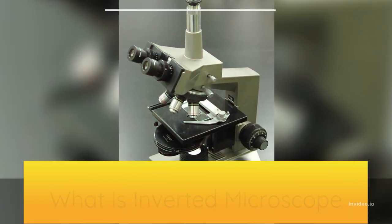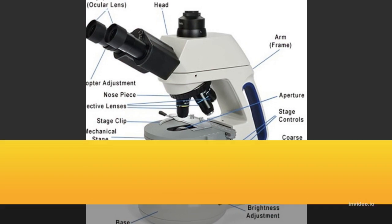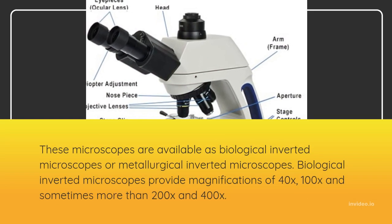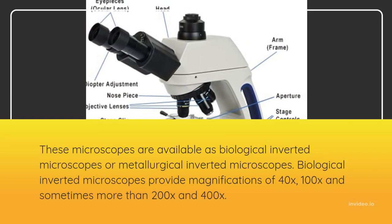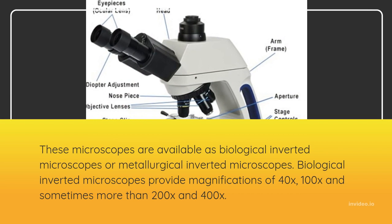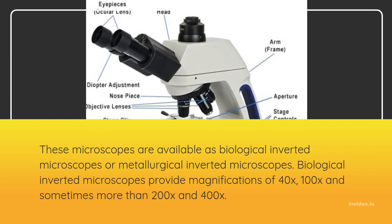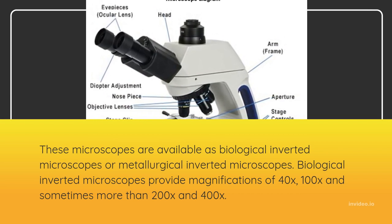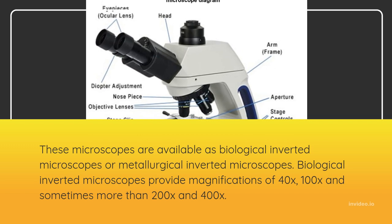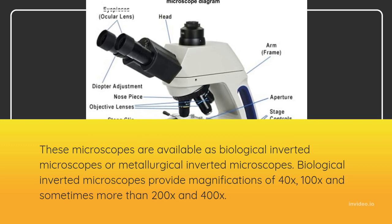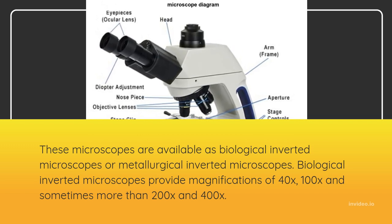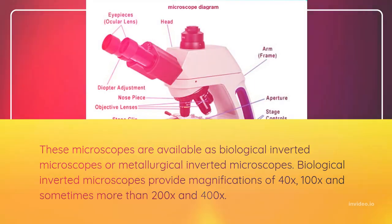What is Inverted Microscope? These microscopes are available as Biological Inverted Microscopes or Metallurgical Inverted Microscopes. Biological Inverted Microscopes provide magnifications of 40x, 100x, and sometimes more than 200x and 400x.